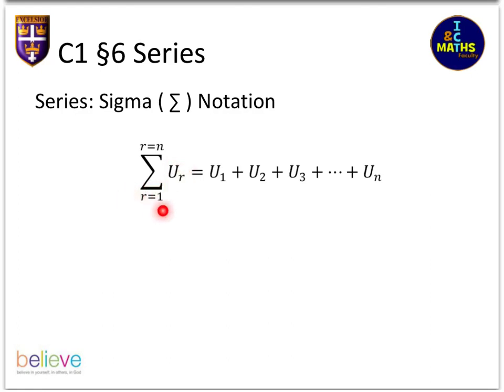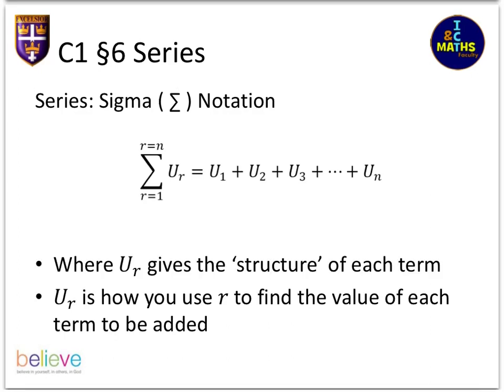The numbers above and below the sigma tell you where to start and stop. You substitute r=1 into the formula to get the first term, then r=2, r=3, r=4, and so on, until you reach whatever number is at the top. That's the last number you put into the formula, giving you the last term. Here's a summary of what I've just said.